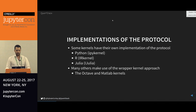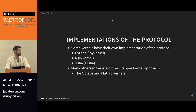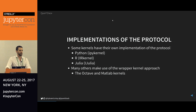There have been two approaches for implementing new kernels. The first is to have an implementation of the protocol in the target language itself. For example, Python has its own kernel written in Python, which is IPykernel. R has a kernel written in R, and the same holds for Julia. Although many others have made use of the wrapper kernel approach, which is to have a Python program that implements the protocol, calls to the interpreter you want to wrap, and captures the output of that interpreter. The current Octave and MATLAB kernels use that system.